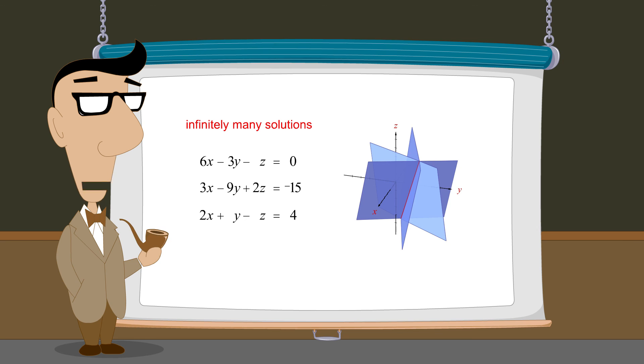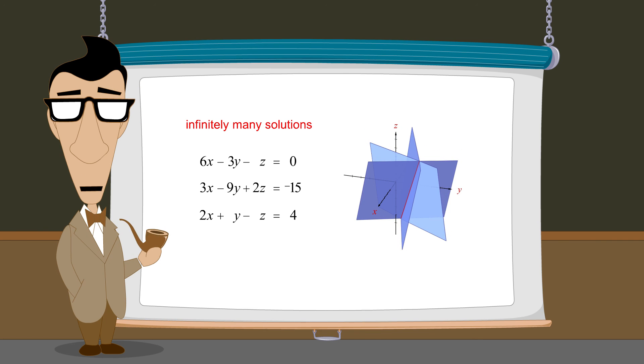So when the solution set for a system of equations in three variables is a line, how do we calculate the parametric representation of that line? In the next lecture, we will demonstrate how this is done.